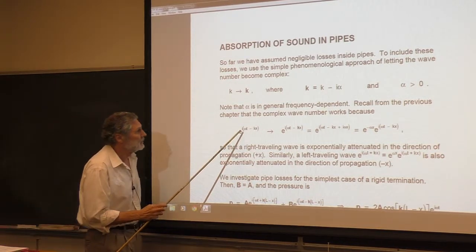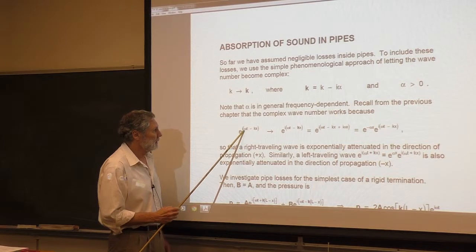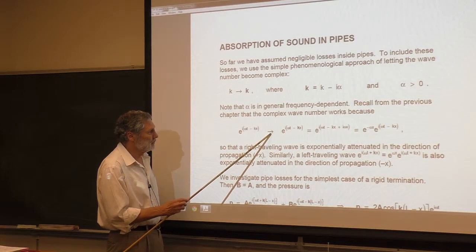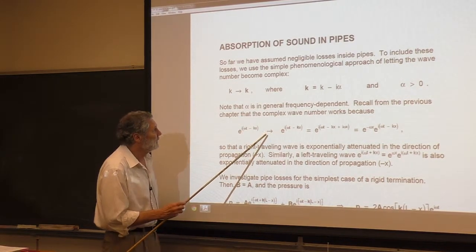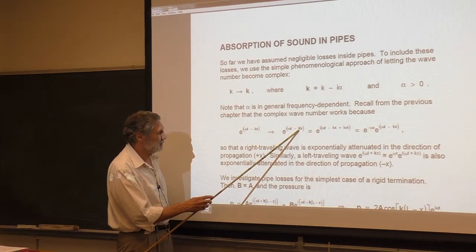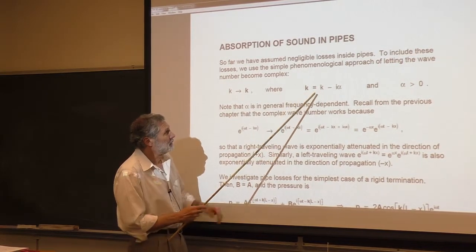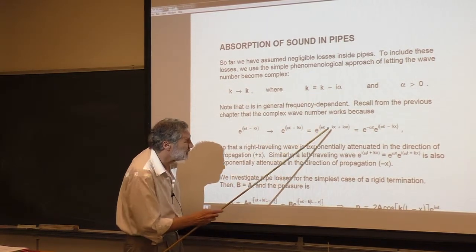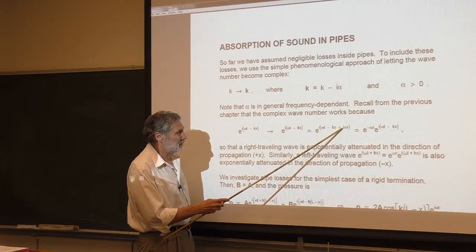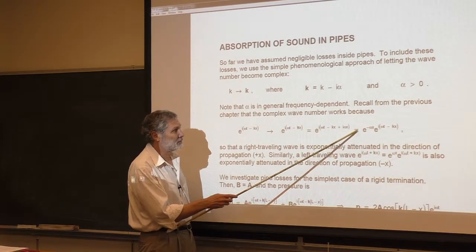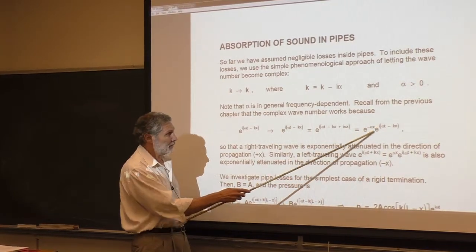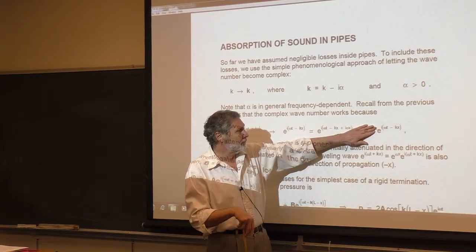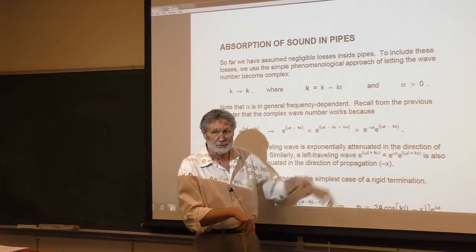Here's a right traveling wave, e to the i(ωt − kx), where k is just 2π over the wavelength. We generalize this by letting k become complex — a bold k — written as the real part minus i·alpha. Substituting that in, the i times i gives a minus alpha·x term, which we can factor out. So this right traveling wave is now attenuated, and alpha is the absorption coefficient.